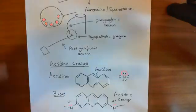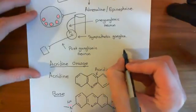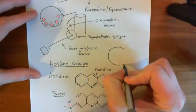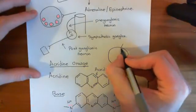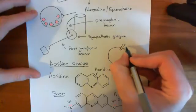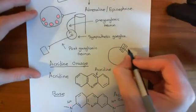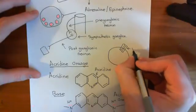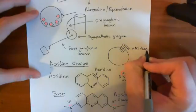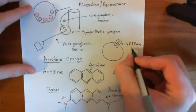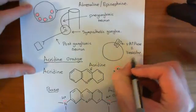Synaptic vesicles have an incredibly high proton concentration. In the membrane of the synaptic vesicle, you have something known as the vesicular proton ATPase, the VATPase.